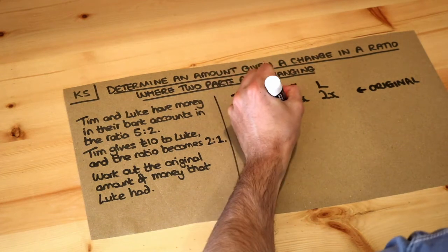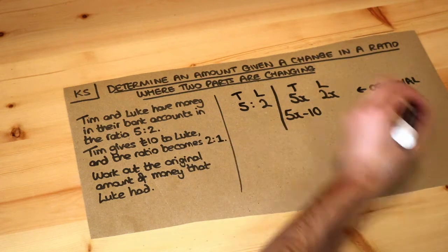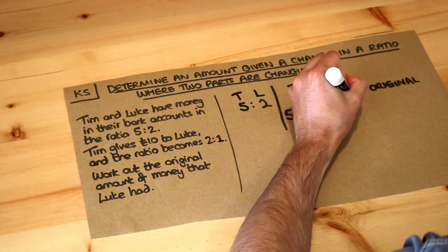If Tim gives 10 pounds to Luke then Tim is going to have 10 pounds less. So Tim would have 5x minus 10 and Luke will have 10 pounds more because he's been given 10 pounds. So he will have 2x plus 10.